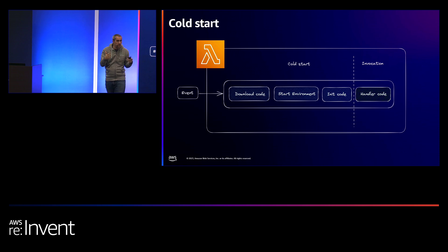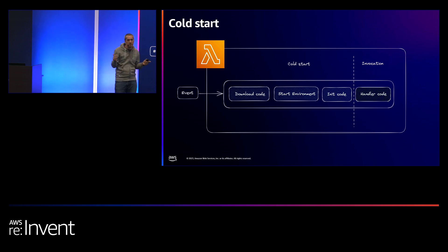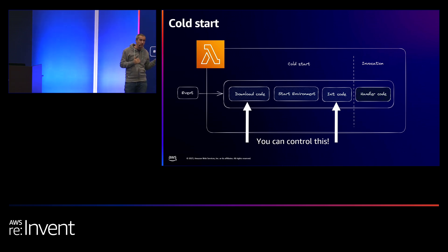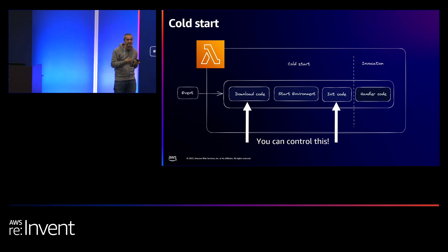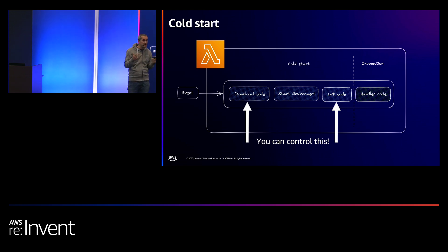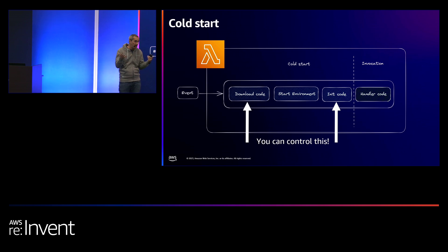For a warm start, once your Lambda function is already up and running, just the handler code is triggered and there's no cold start. This happens the first time your Lambda function is invoked, when you update configuration, or during a big traffic spike. The cool thing is you have control over some of these components. The download code part you can influence — if your package is small it downloads faster. You also control the initialization code; if you're allocating a lot of memory, the init code will be longer.